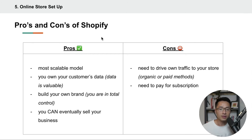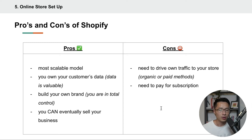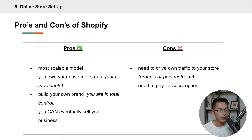For Shopify, the pros are that it's the most scalable model — you own your customer's data, you can build your own brand, you are in total control of your business, and you can eventually sell your business. The cons are that you need to drive your own traffic with organic or paid methods, and you need to pay for the subscription. When all things are considered, the pros definitely outweigh the cons, and I think building your store on Shopify is the best option if you actually want to build a scalable business that you have full control of.